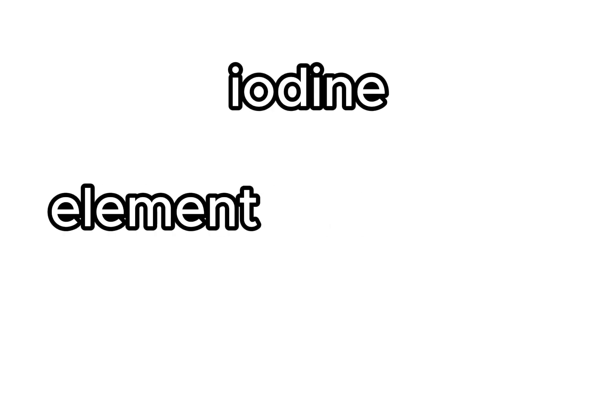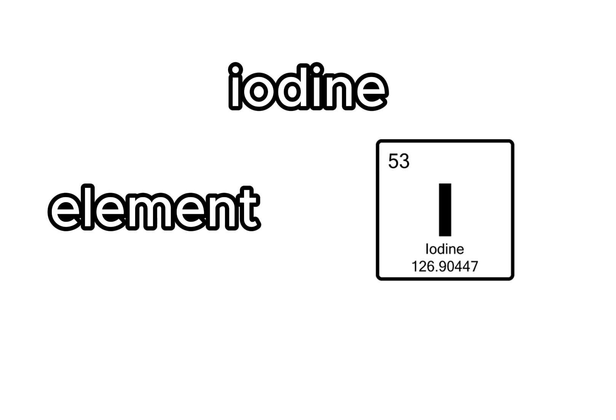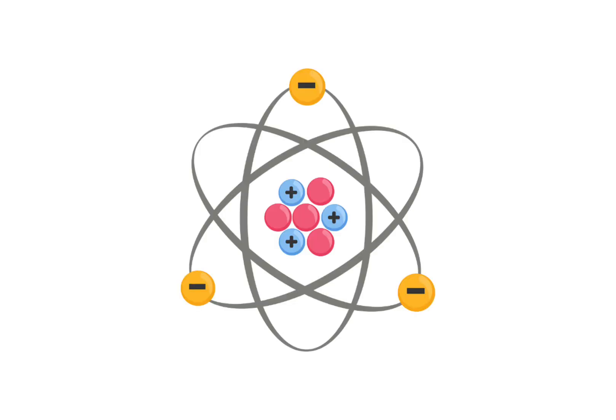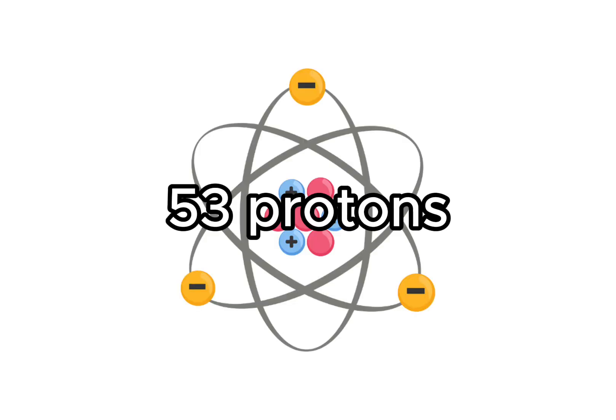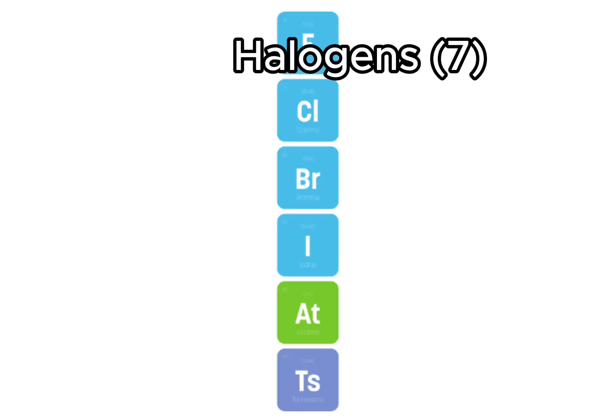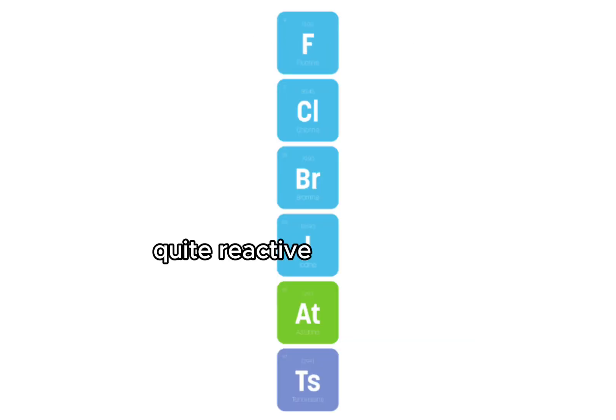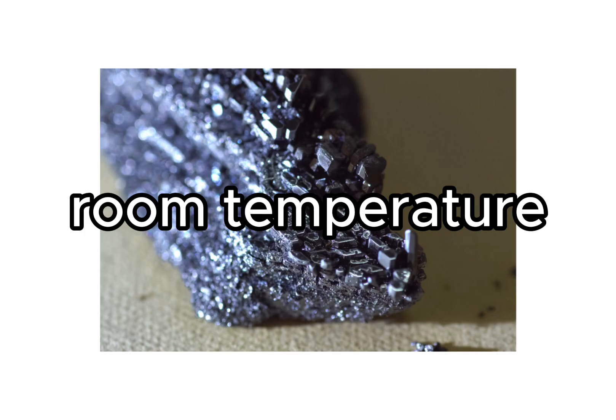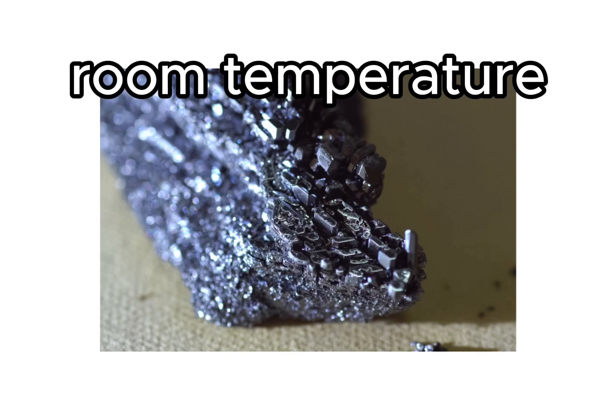Iodine is a chemical element on the periodic table with 53 protons in its nucleus. Iodine is also a halogen, which makes it quite reactive. It's also a solid at room temperature, making it fairly unique.